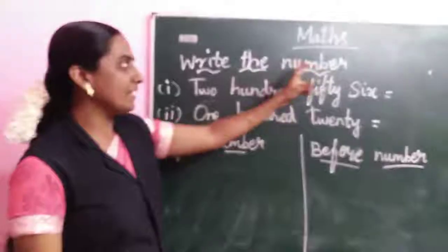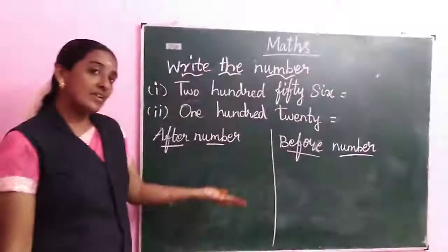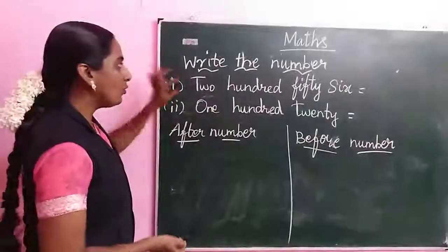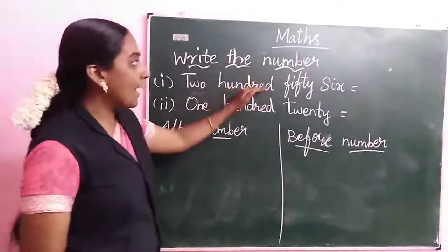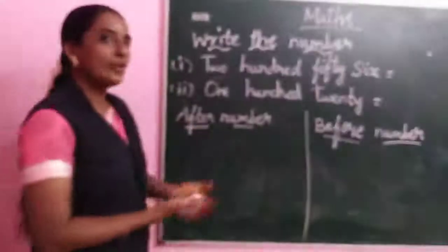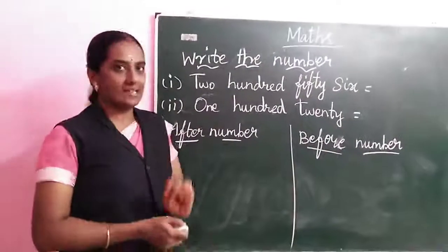Next, write the number. In the previous title we have written the number. After writing the numbers, next, now look at that. I am writing the number name. We are writing the number. How to take the first? We are taking the highest place value.